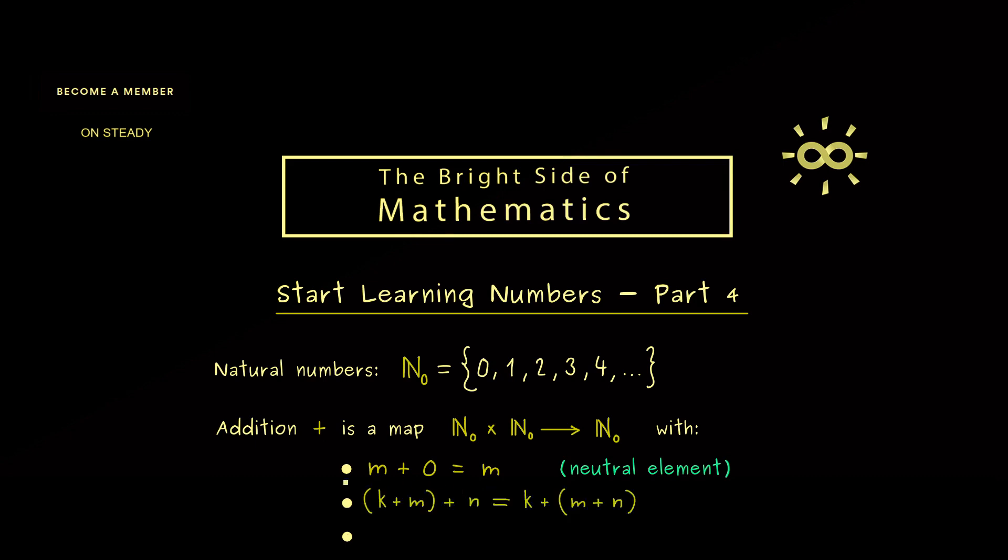Then the next property is the one we discussed in detail in the last video. It's the associative law, which tells you that for 3 elements you can set the parentheses as you want. There we use the mathematical induction to prove it, and in a similar way we can prove the third property.